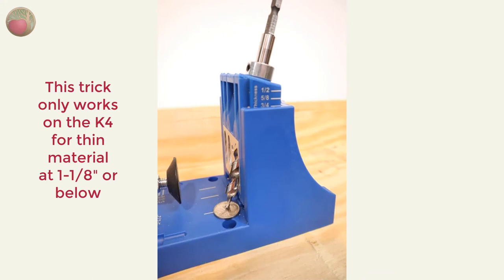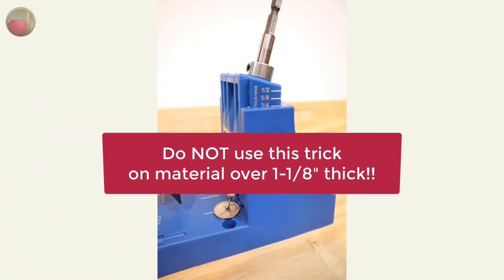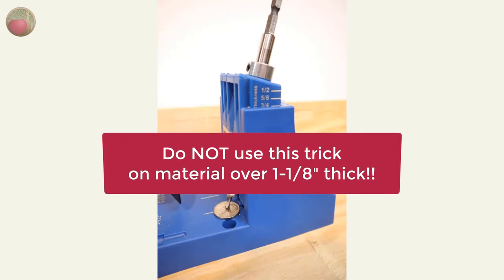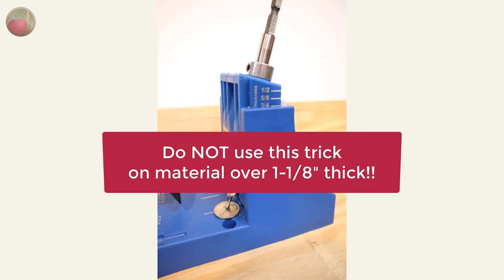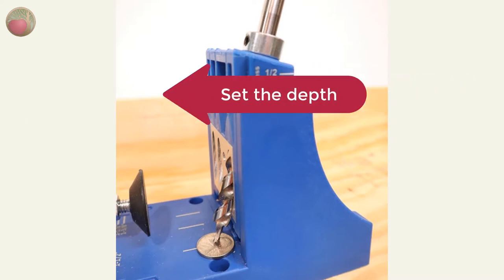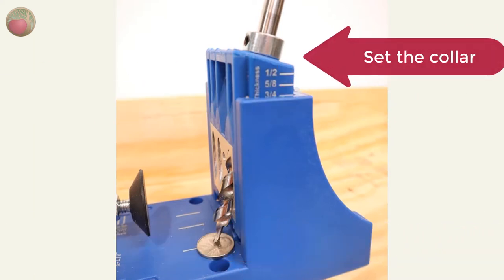Here's a super quick drill bit collar setup. For thin material you can use this super quick trick and I want to thank Jens Jensen for this tip on the Kreg forum post. But do not use this trick for material over one and one eighth inch thick. The reason why is because you jump to a much longer screw after that thickness. Set the jig depth then place a nickel under one of the hole outputs and then drop in your bit and set the collar to that length.